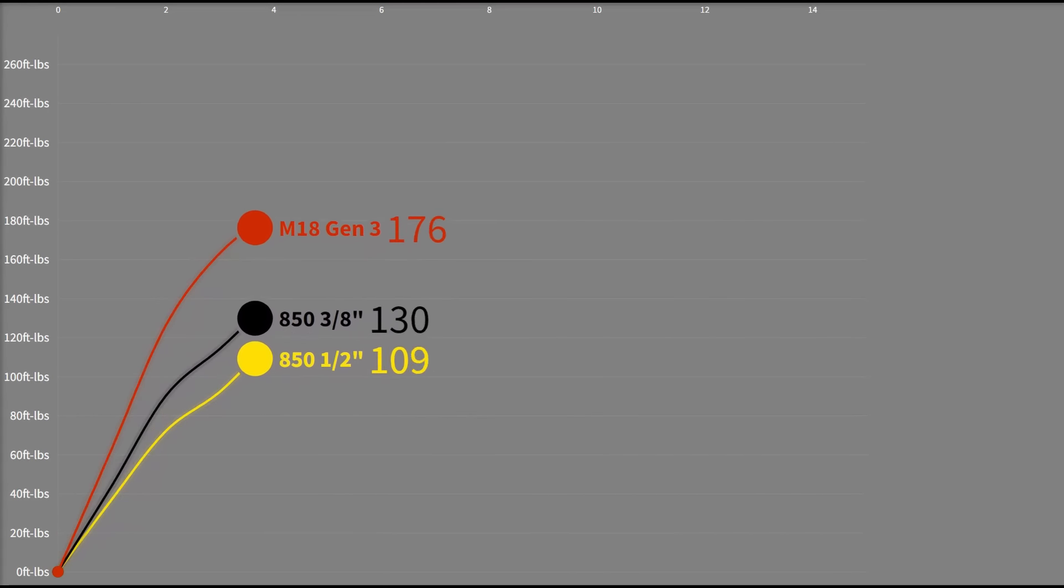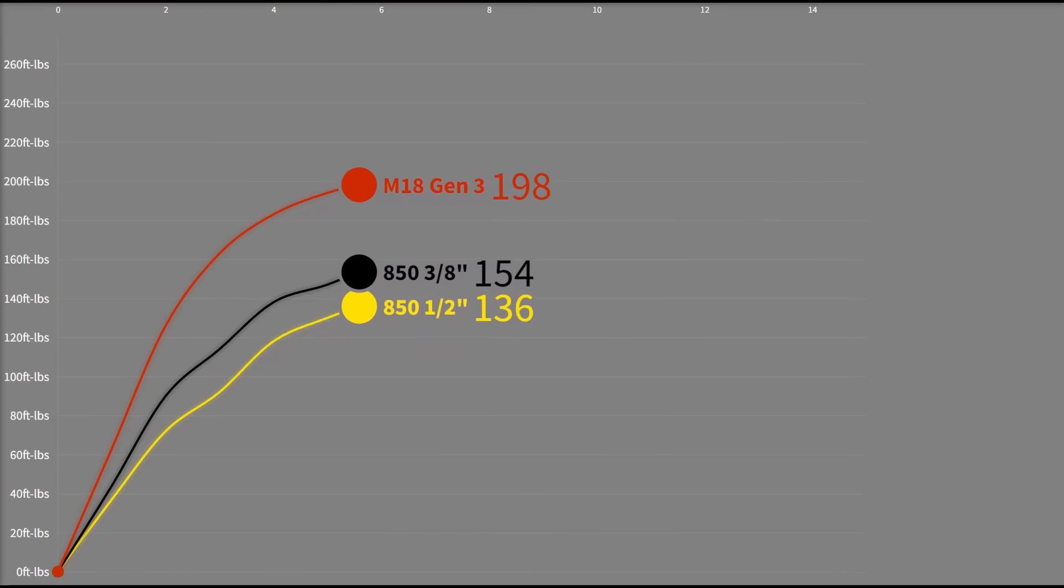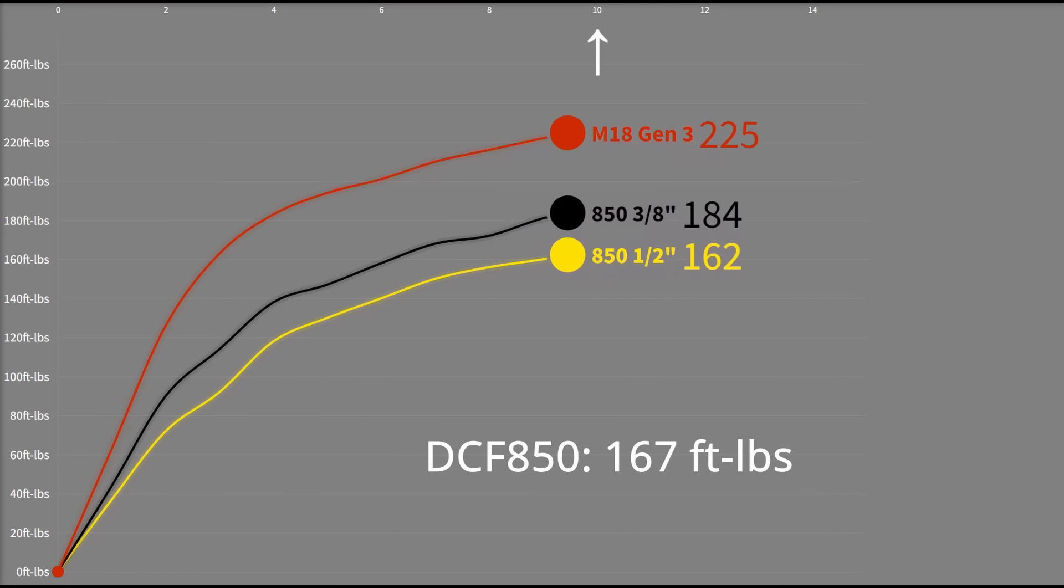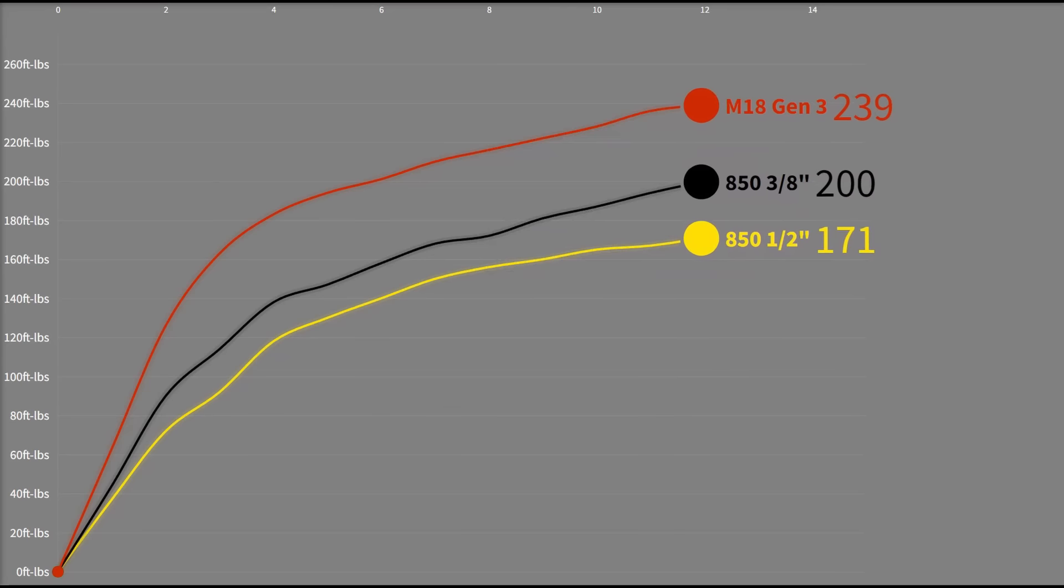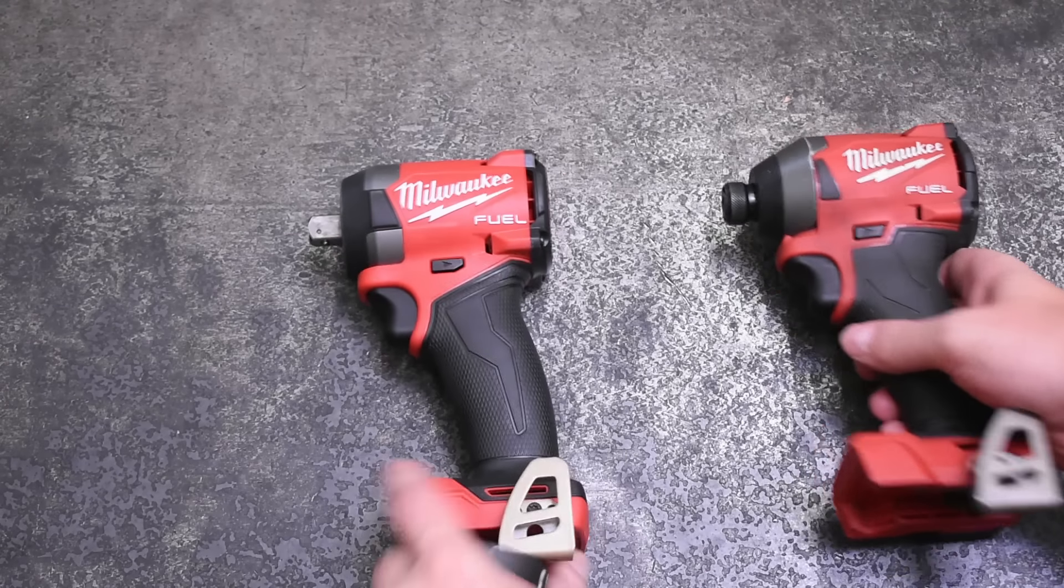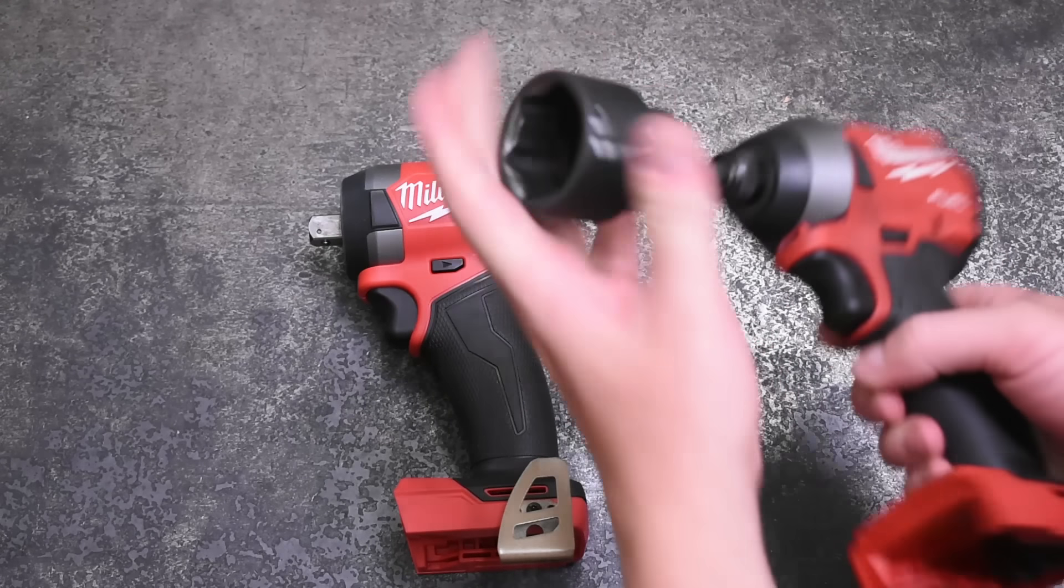If you look at our impact driver ranking using traditional quarter-inch hex collets, the DCF 850 made 167 peak in a 10 second reverse test. These DeWalts converted to wrenches went under that with the half-inch and a bit over with the three-eighths. So if you do convert these for size and power reasons, go three-eighths for sure, but not as big a difference as we expected from losing that impact adapter like we're used to seeing on Milwaukee's.